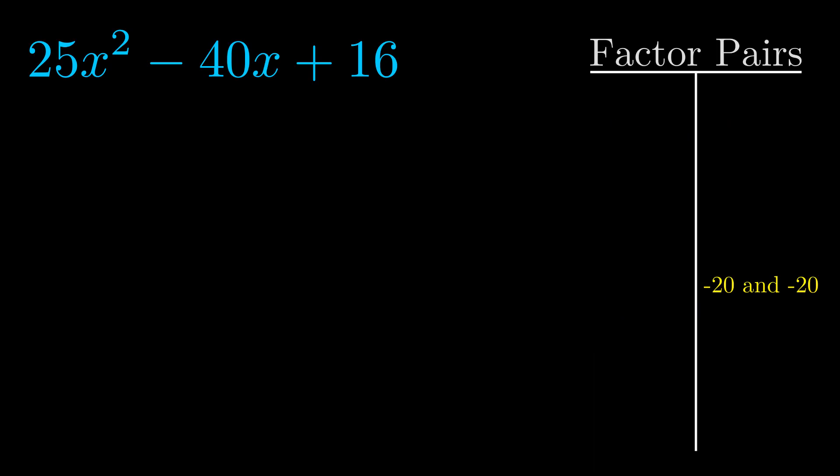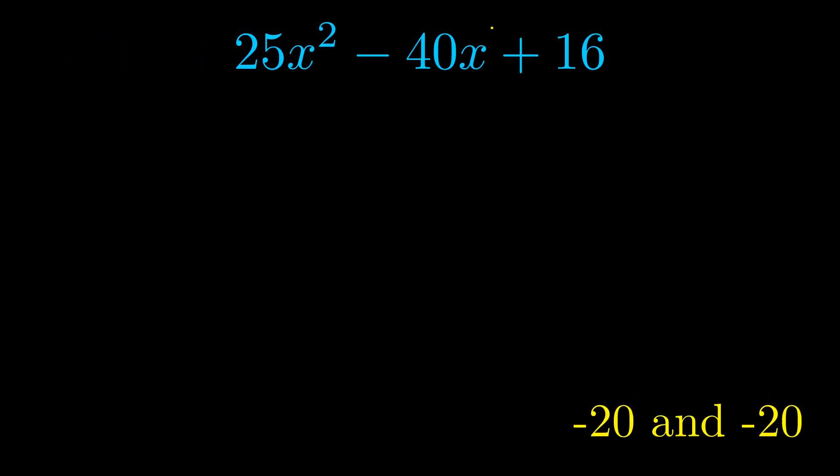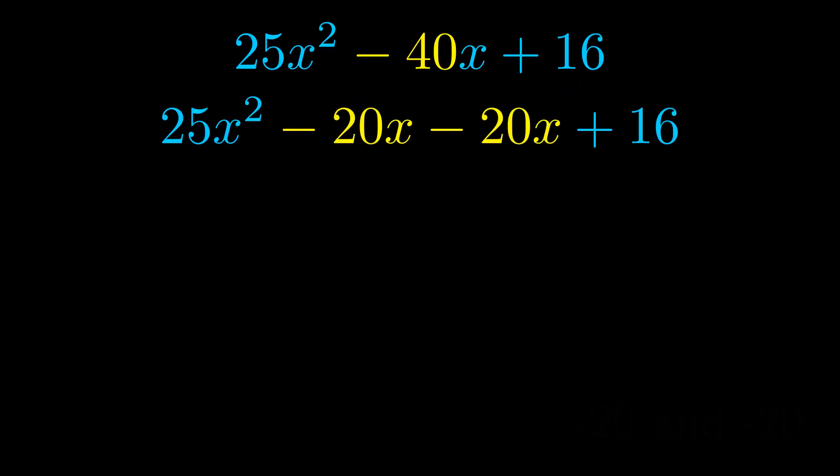Now once we have this factor pair what we want to do is we want to use it to split up the b value. Notice how I'm going to keep my first term and my last term completely unchanged. It is only this b term highlighted in yellow that gets expanded into this correct factor pair.